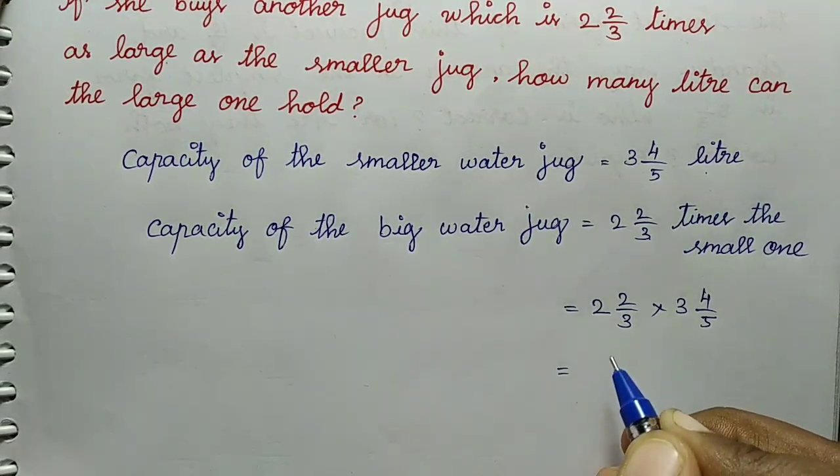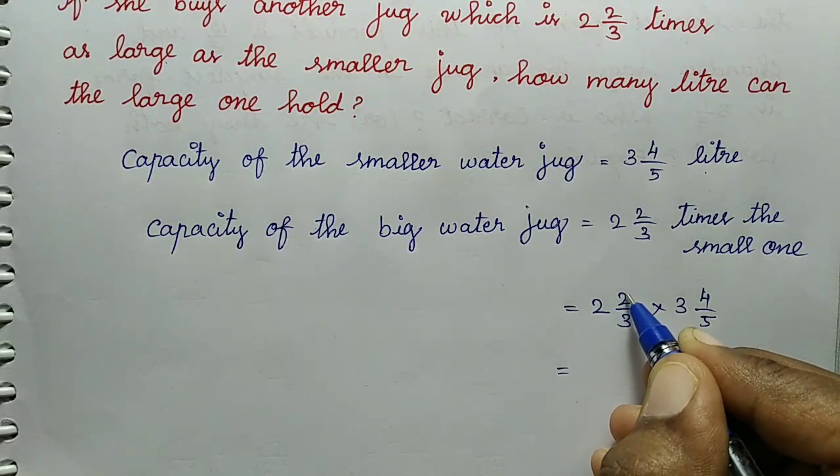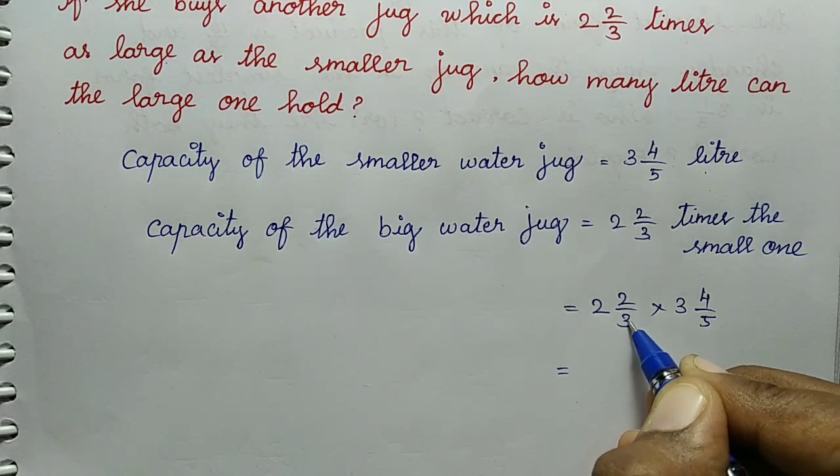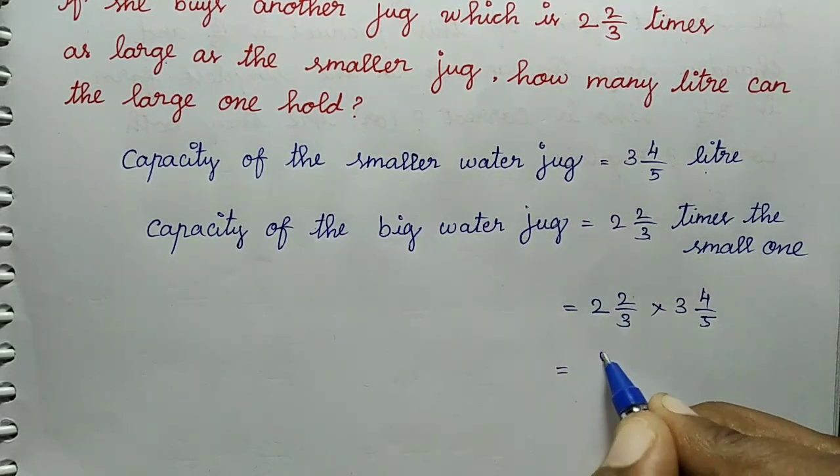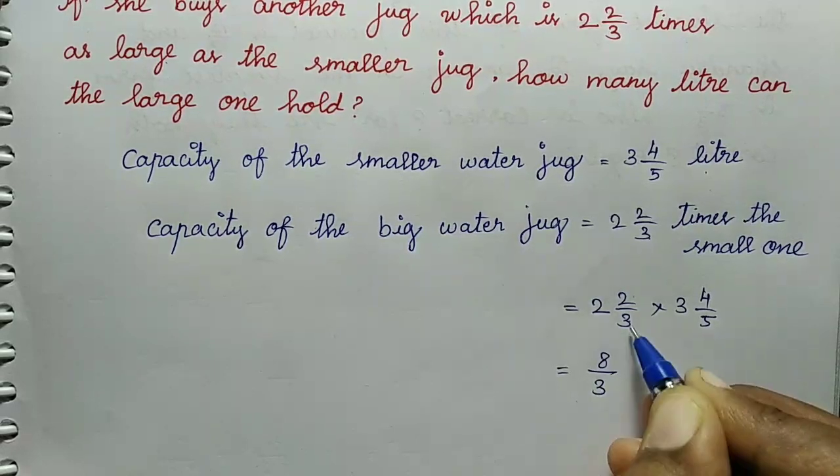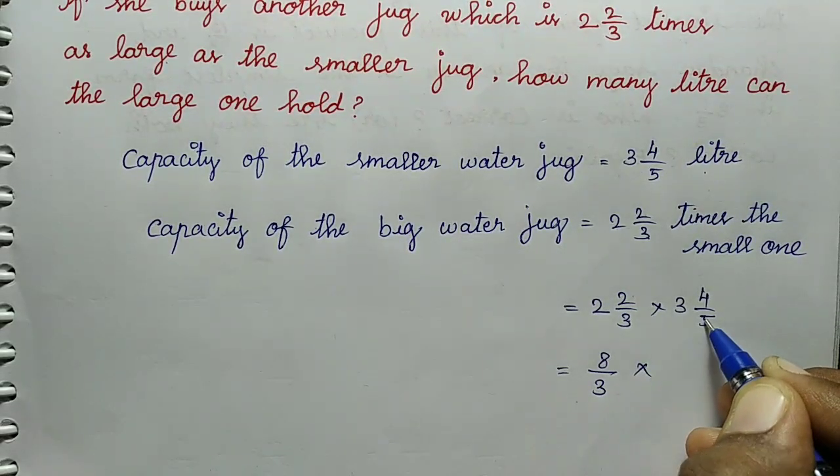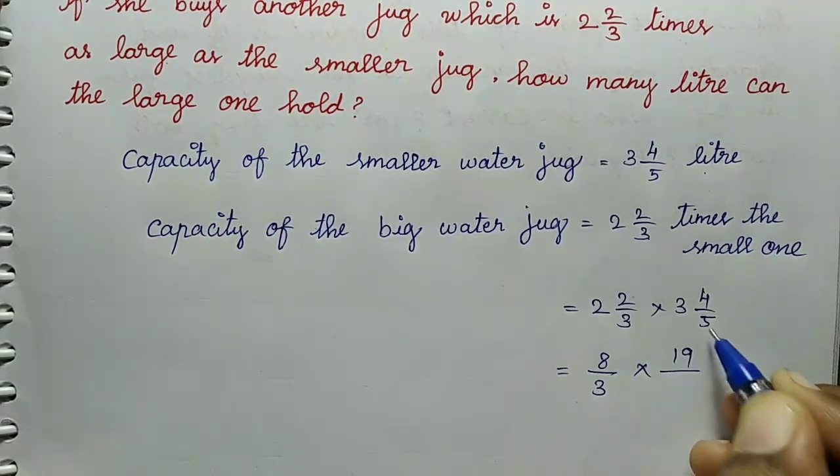Improper fraction are converted. Denominator into whole number plus the numerator, whole divided by denominator. So 3 times 2 is 6, 6 plus 2 is 8, 8 divided by the denominator value 3. Same, 5 times 3 is 15, 15 plus 4 is 19, divided by 5.